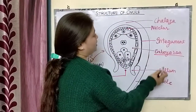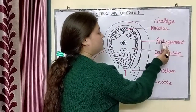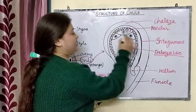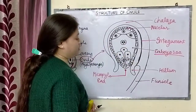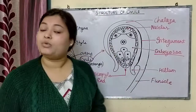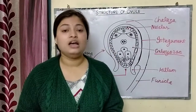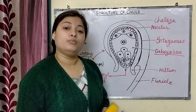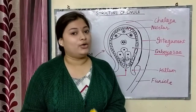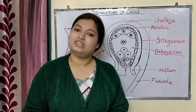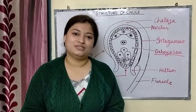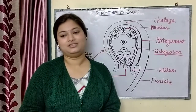To summarize: chalaza, nucellus, and integument are all protective guards surrounding the delicate embryo sac. I hope today's diagram is clear. This topic is very important for your exams. Thank you for watching this video — I hope you enjoyed it.